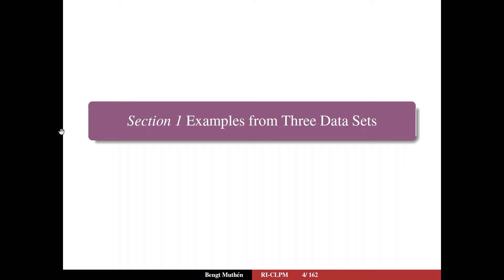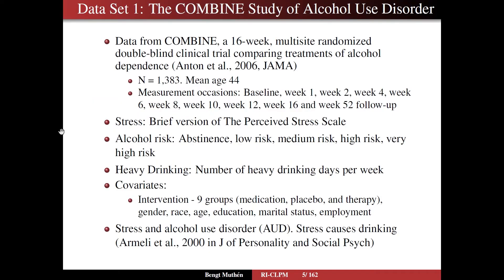We now turn to section one to talk through examples from three different data sets. On slide five, the COMBINE study is described — a very large study of alcohol use disorder. It is a 16-week multi-site randomized double-blind clinical trial comparing treatments of alcohol dependence, so it's not a general population sample but a treatment sample. The study is described in Anton and others in the Journal of the American Medical Association.